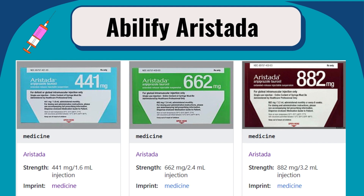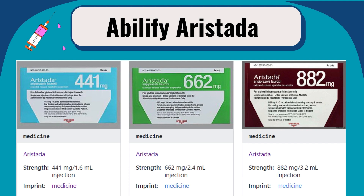Abilify Aristata is administered as a single intramuscular injection, typically every four to six weeks. The long-acting form of the medication provides a steady level of Abilify in the body over an extended period of time, reducing the need for frequent dosing and increasing medication adherence.